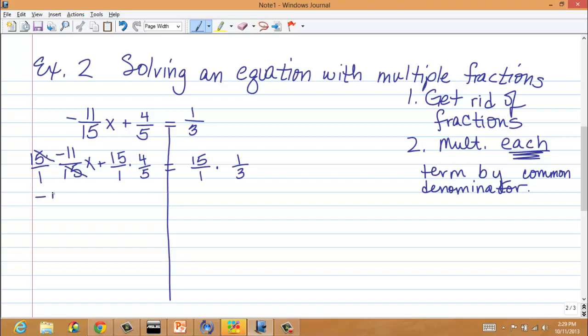leaving us with negative 11x. Then, I have 15. There's two different ways that we can do it. I'll say, if you have 15 times 4, that's 60. 60 divided by 5 is what? Hopefully you're thinking 12. So, we now have negative 11x plus 12 equals, and this is 15. When we multiply, it will be 15 times 1, which is 15 over 3, which is 5. Now, isn't this so much easier to deal with? Okay? So, first step, get rid of the fraction. Second step, multiply each term by the least common denominator.